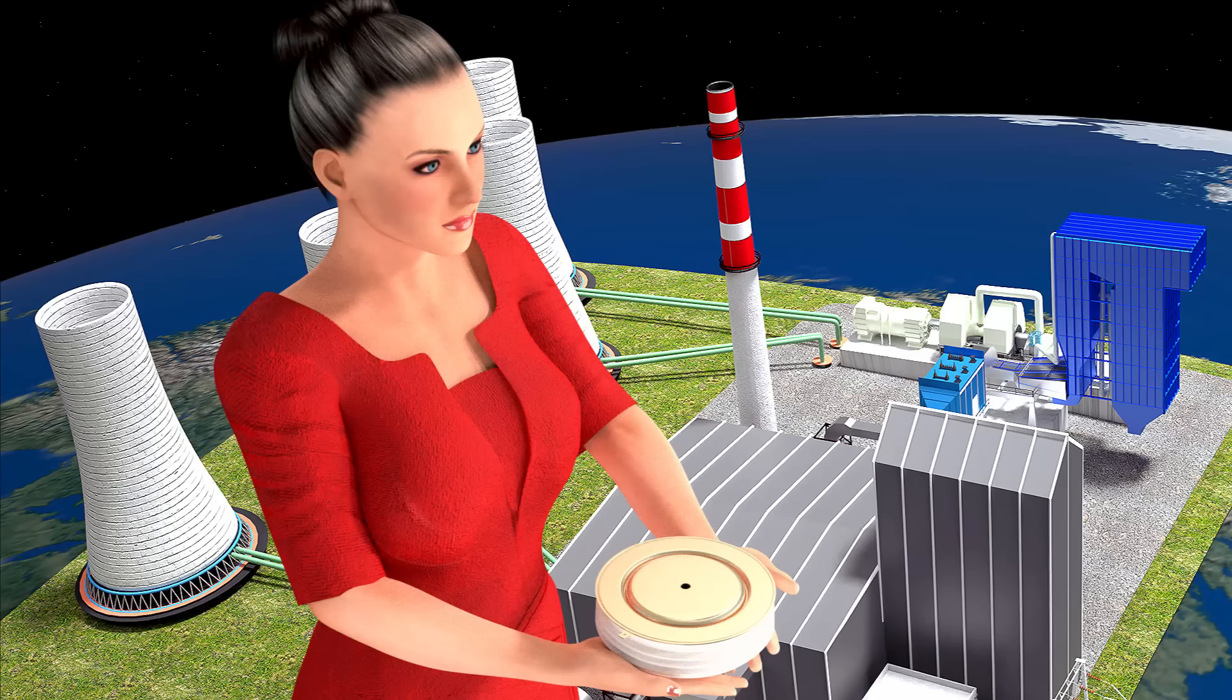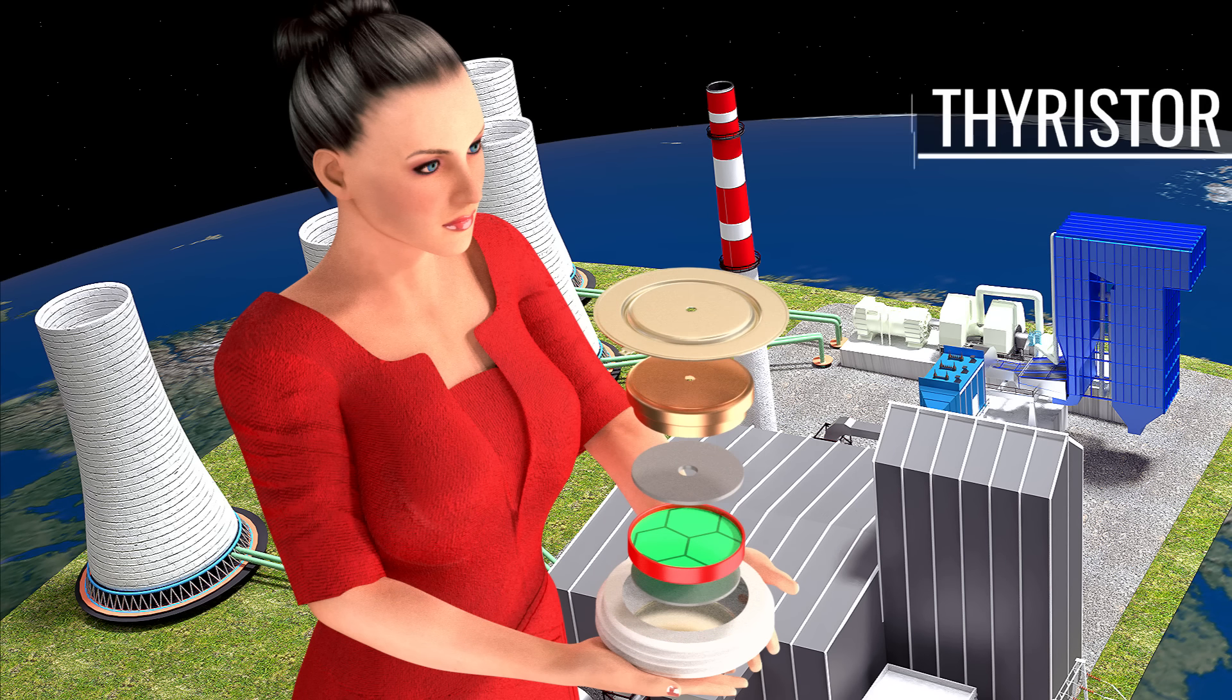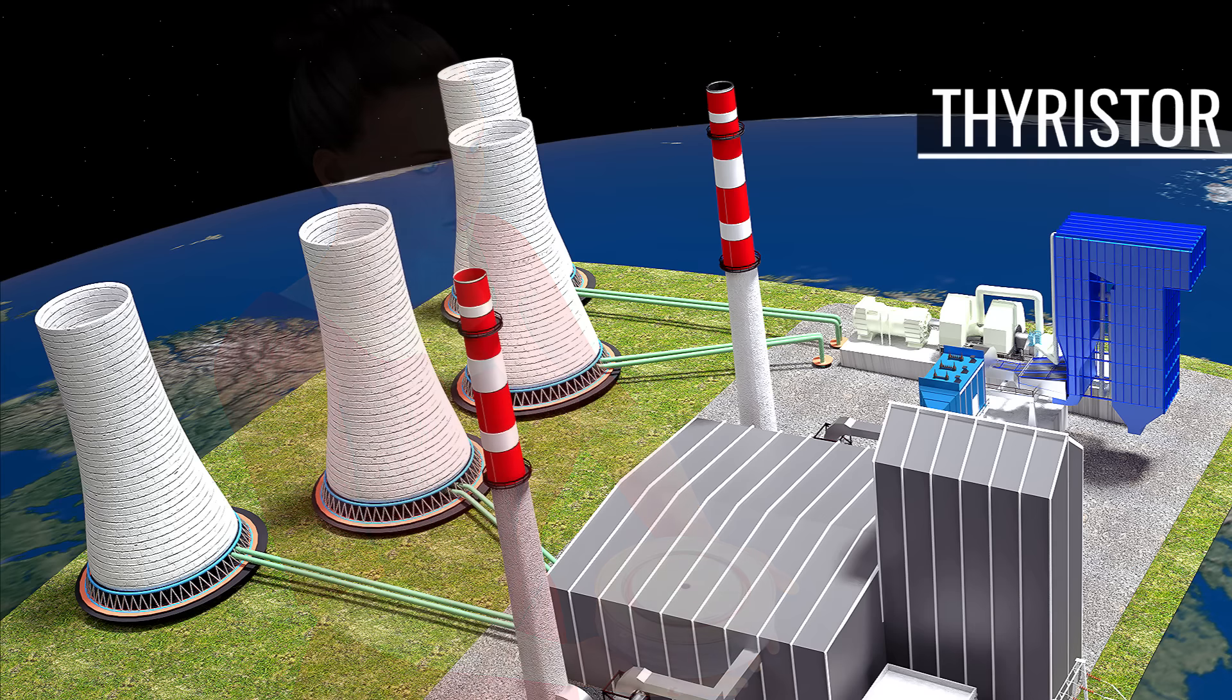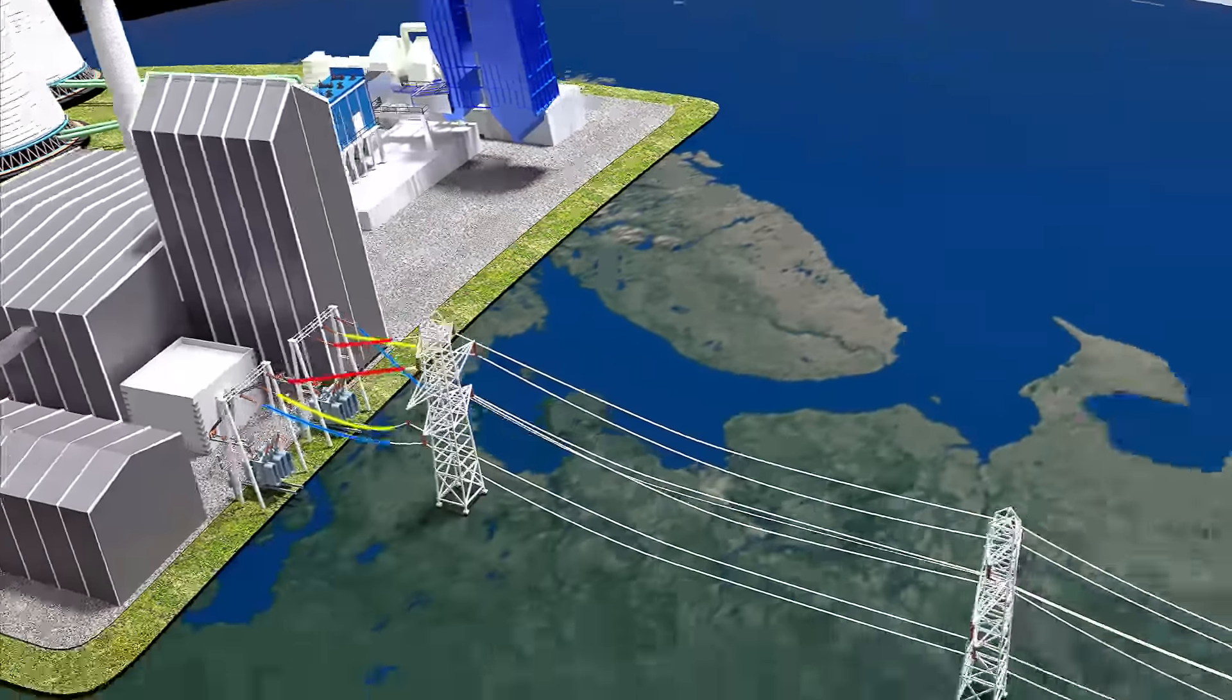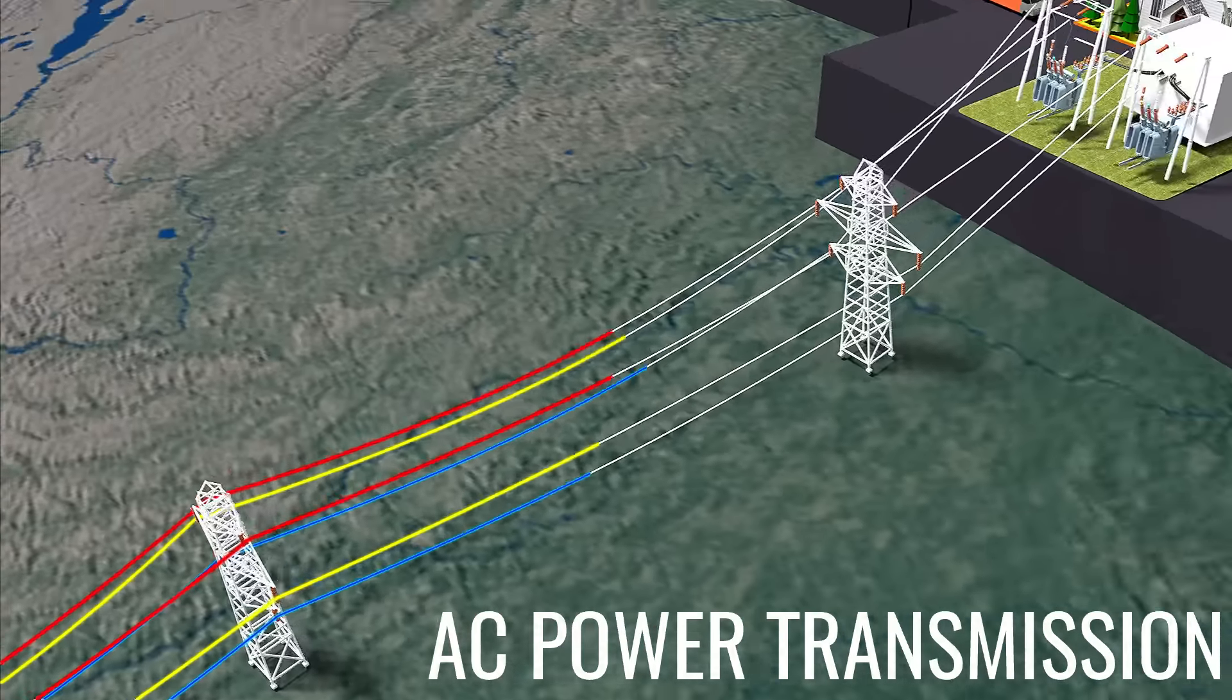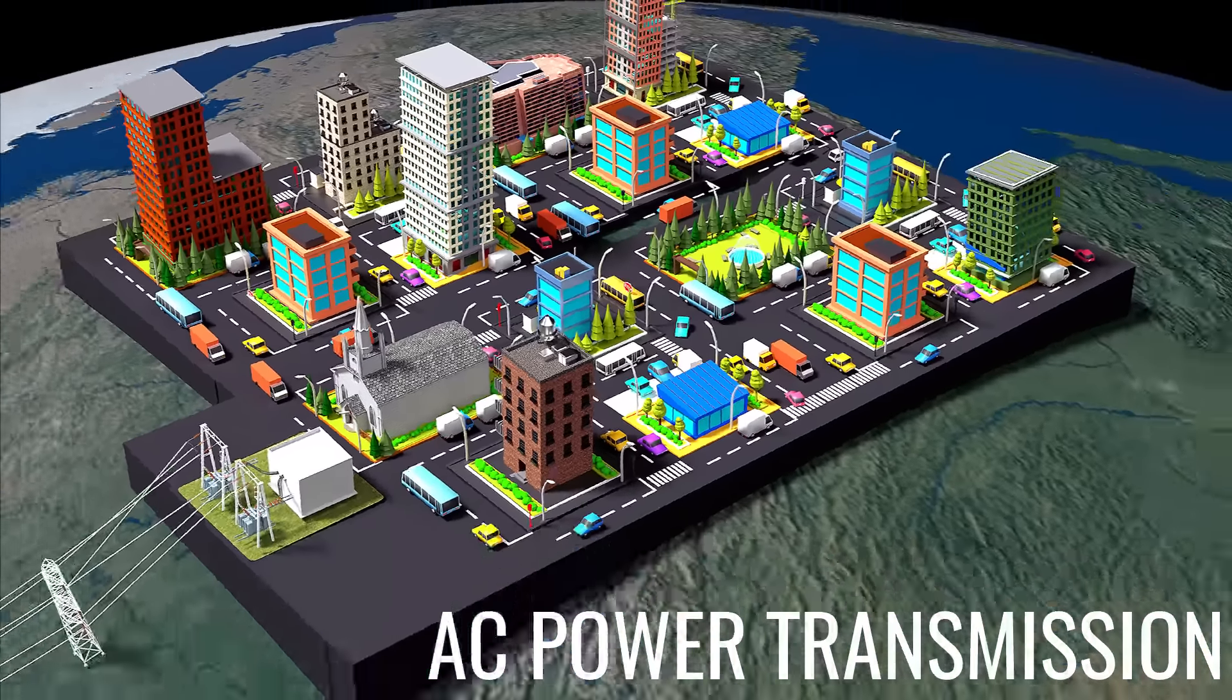Do you know that a semiconductor device called a thyristor solves the huge issue of power transfer from a generating station to consumers located far away? Traditional AC power transmissions face huge power losses and also suffer from the issue of stability and controllability.